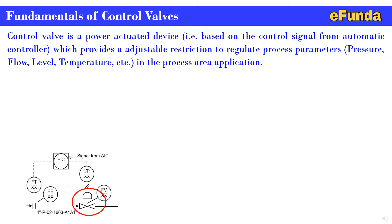The control valve is the most common type of final control element in a process control system. The final control element is the mechanism which alters the value of the manipulated variable in response to the output signal of an automatic controller — that is, from the FIC controller — or a manually manipulated control device. The operation of the control valve can be either pneumatic or electric type.